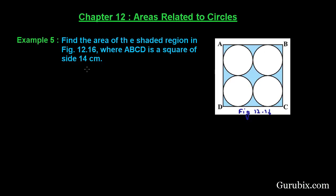Let's see how to solve this question. You can easily observe that we can find the area of the shaded region by just subtracting the area of these four circles from the area of the square. So for that, first of all we shall find the area of the square ABCD.